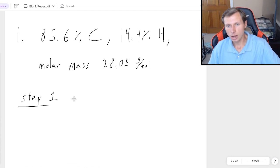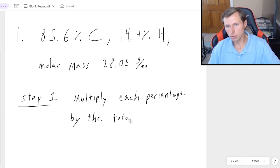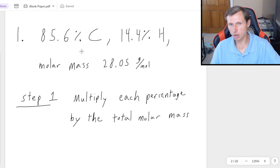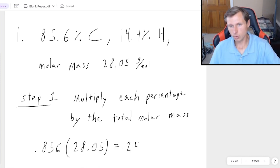Step one, I want you to multiply each percentage by the total molar mass. So in this case, the 28.05. Let me start with the carbon. Remember that 85.6% is really .856 as a decimal. Definitely write it as a decimal, it'll be way easier. And then that is times 28.05. So that's going to get me 24.01. I don't care about the units, but this is carbon.